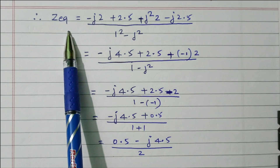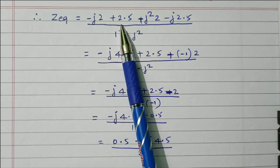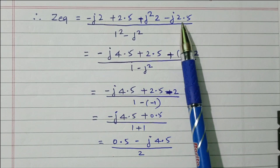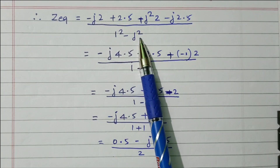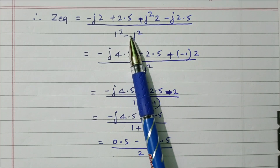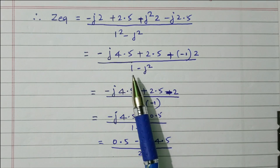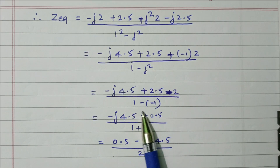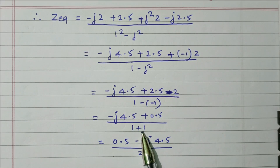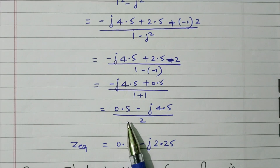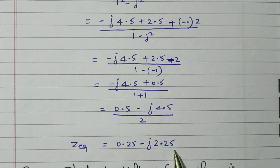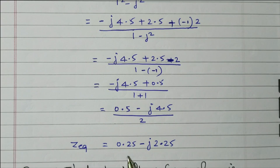To verify Z equivalent: starting from (2.5 − j2) divided by (1 + j), multiply and divide by the complex conjugate (1 − j). The denominator becomes 1 − j² = 1 + 1 = 2, removing the complex number. After simplification we confirm Z equivalent = 0.25 − j2.25. The Z equivalent is verified and total impedance is confirmed.